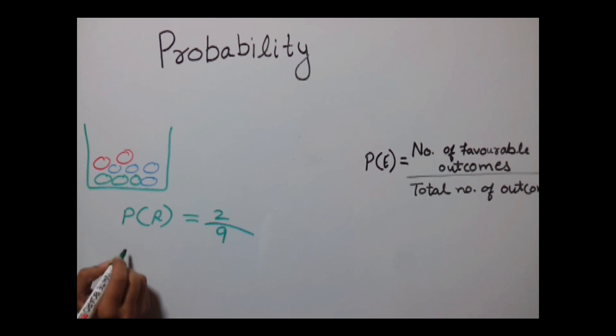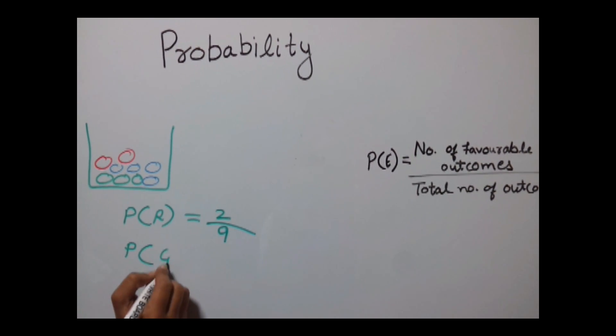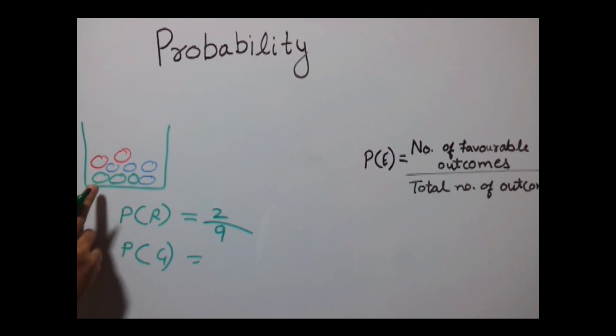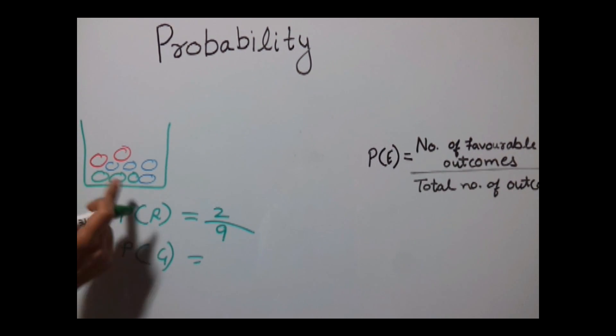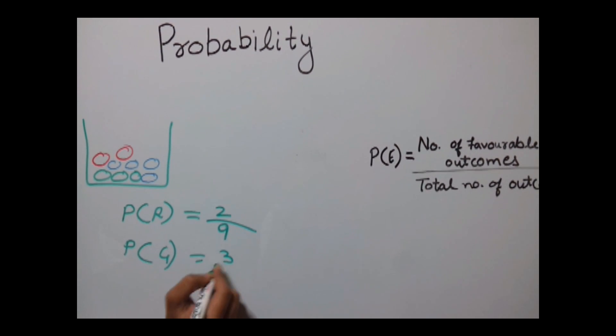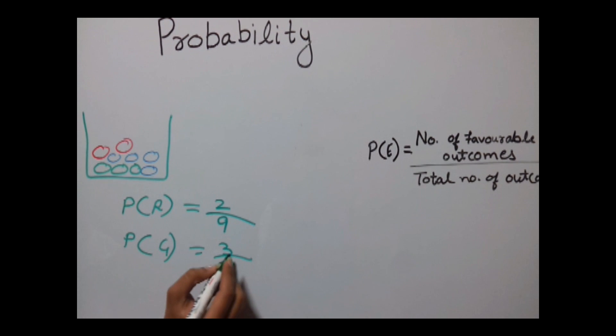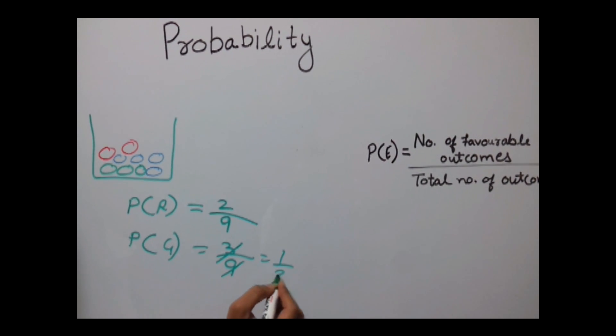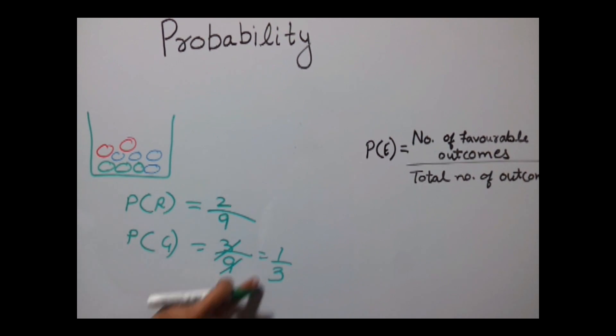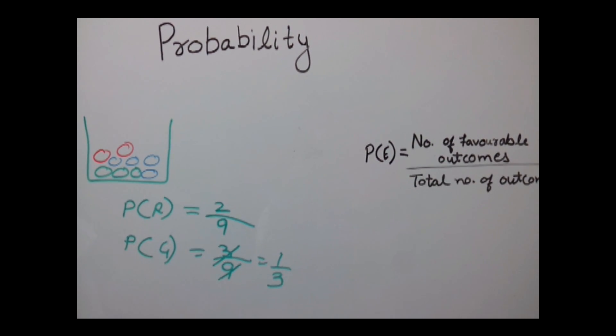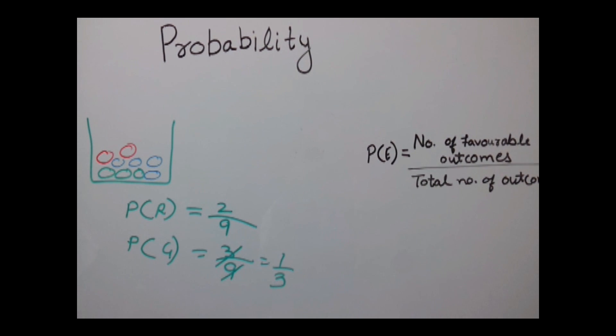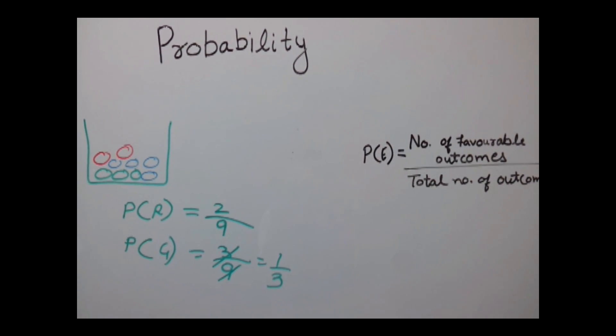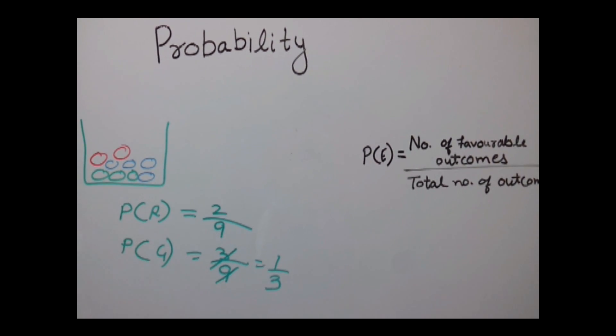Let's find out the probability of green ball. Probability of green ball would be three by nine, because there are three green balls and total number of balls are nine. So it is three by nine or one by three. This means that out of three chances, there is a single chance that green ball would be out. In this way, you can easily calculate the probability.